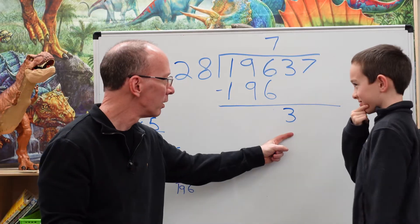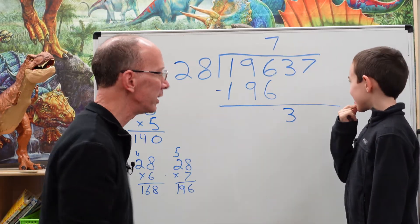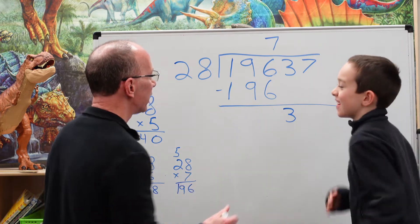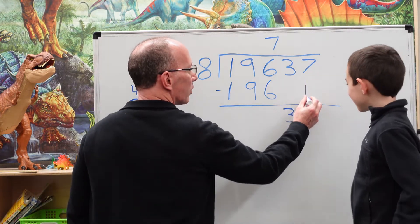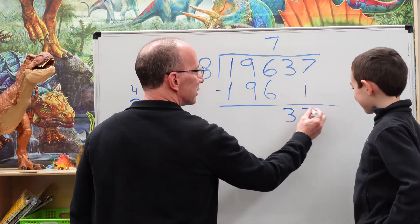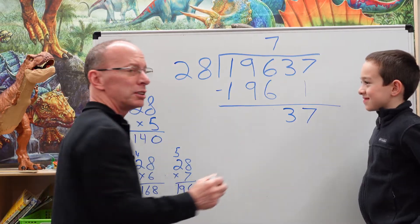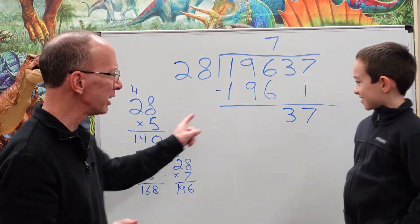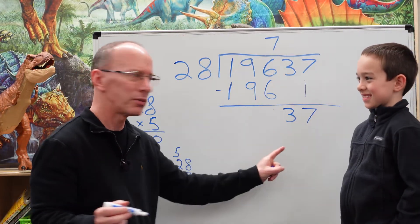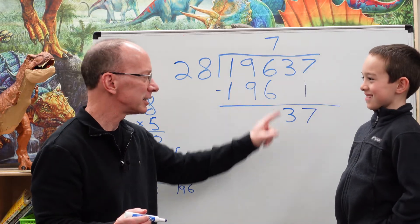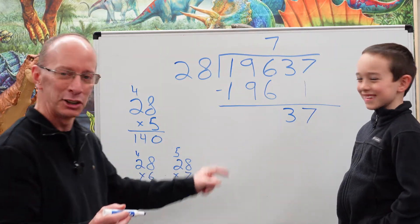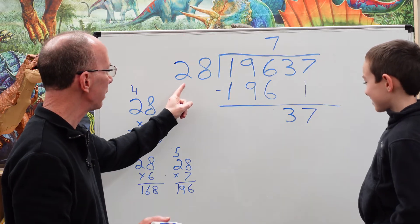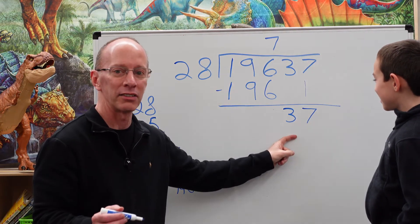We can't put 28 into 3, can we? No. So then we need to drop the next number down — bring this number all the way down to seven. Now there are some questions going on here: I've never dropped two numbers down before. So how many times can I put 28 into 37?